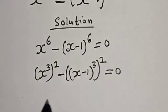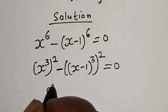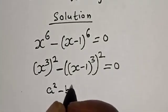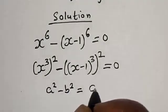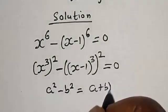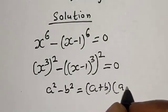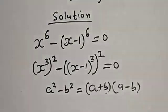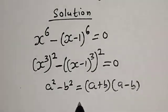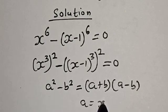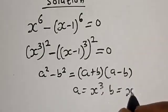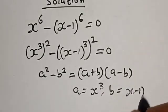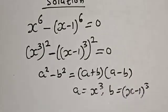This is a difference of two squares: a squared minus b squared is equal to a plus b multiplied by a minus b, where a is equal to x raised to power 3, and b is equal to x minus 1 raised to power 3.